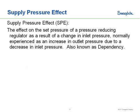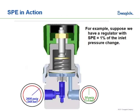Now it makes sense to actually look at an example of this to understand it a little bit better. Here we've got a regulator and we're going to suppose that it has a supply pressure effect of 1%. It's connected to a cylinder, so we have 3600 psi on the inlet side and we have the regulator set to 50 psi on the outlet side.